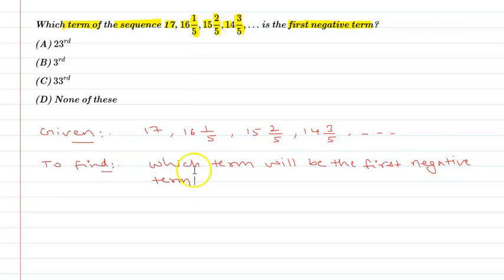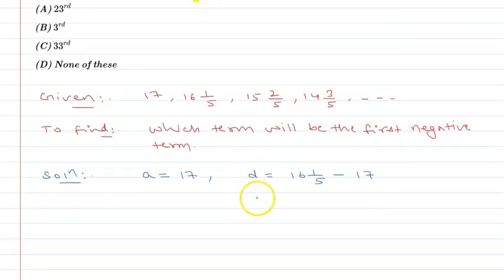So if I am going to do this, it is an AP. The first term is 17, and common difference is 16 1/5 minus 17, which is minus 4/5.